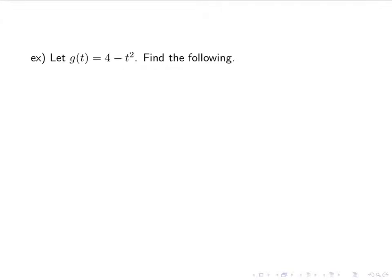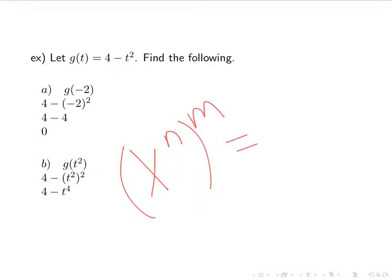So let's try another one. g of t equals 4 minus t squared. Let's find g of negative 2. 4 minus negative 2 squared is 4 minus 4, which is 0. Next, we have g of t squared. 4 minus t squared squared becomes 4 minus t to the 4th. Remember, if I have something to a power and then I raise it to another power, I simplify it by multiplying. So it's t to the 4th because 2 times 2 is 4. Not because 2 plus 2 is 4. Not because 2 squared is 4. But 2 times 2 is 4. We multiply them together.